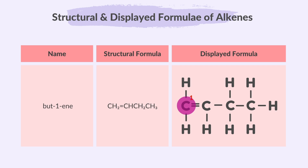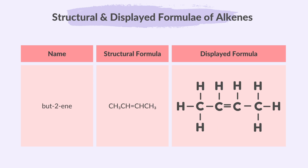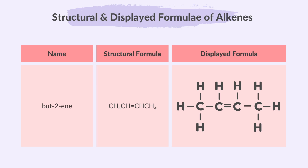Since this hydrocarbon has four carbon atoms, it starts with 'but'. Because it has a double bond, the name ends with 'ene', therefore the name of this compound is but-1-ene. In but-2-ene, the double bond is between the second and third carbon atoms. We again number from the end closest to the double bond, making this carbon number two. This compound also has four carbon atoms, so it starts with 'but', and the presence of the double bond means the name ends with 'ene', therefore the name is but-2-ene.